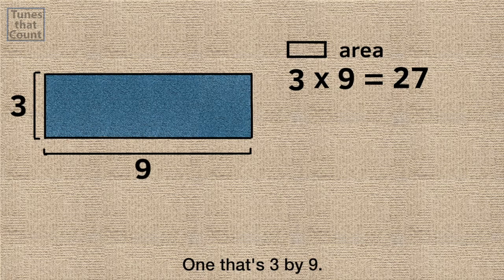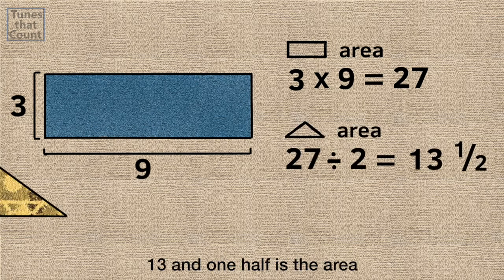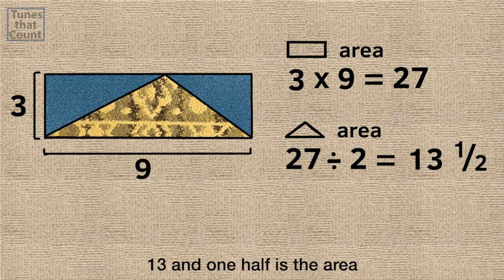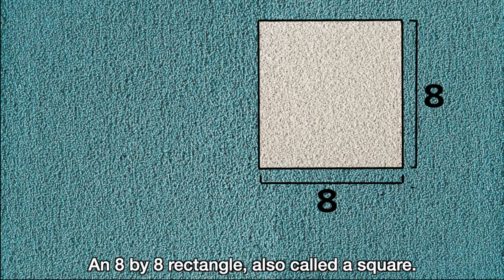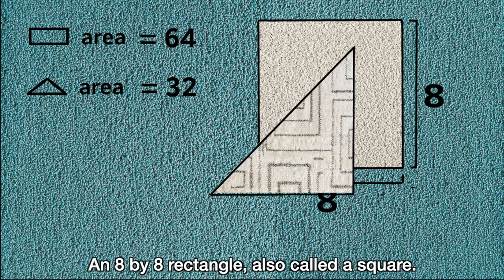One that's 3 by 9. Thirteen and one half is the area of the triangles inside. An 8 by 8 rectangle, also called a square.